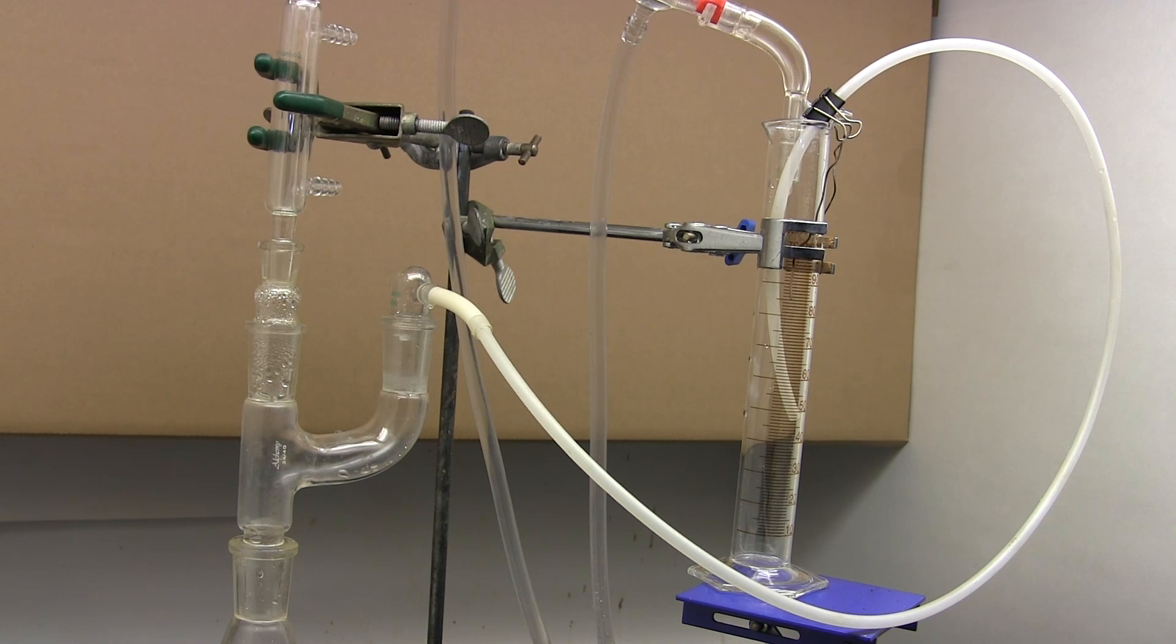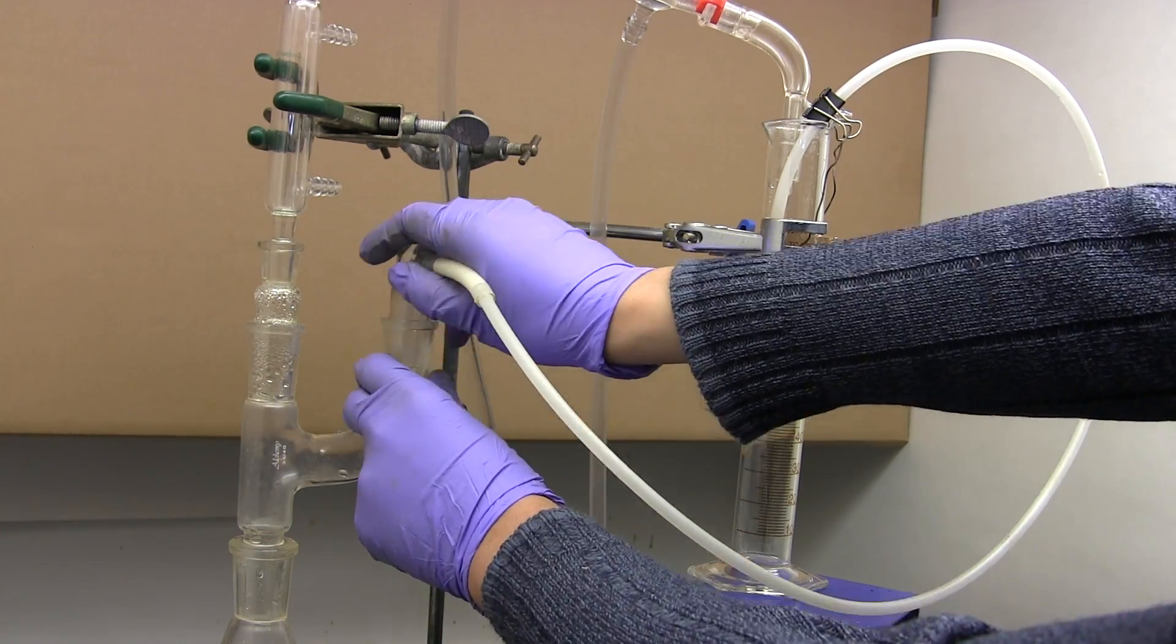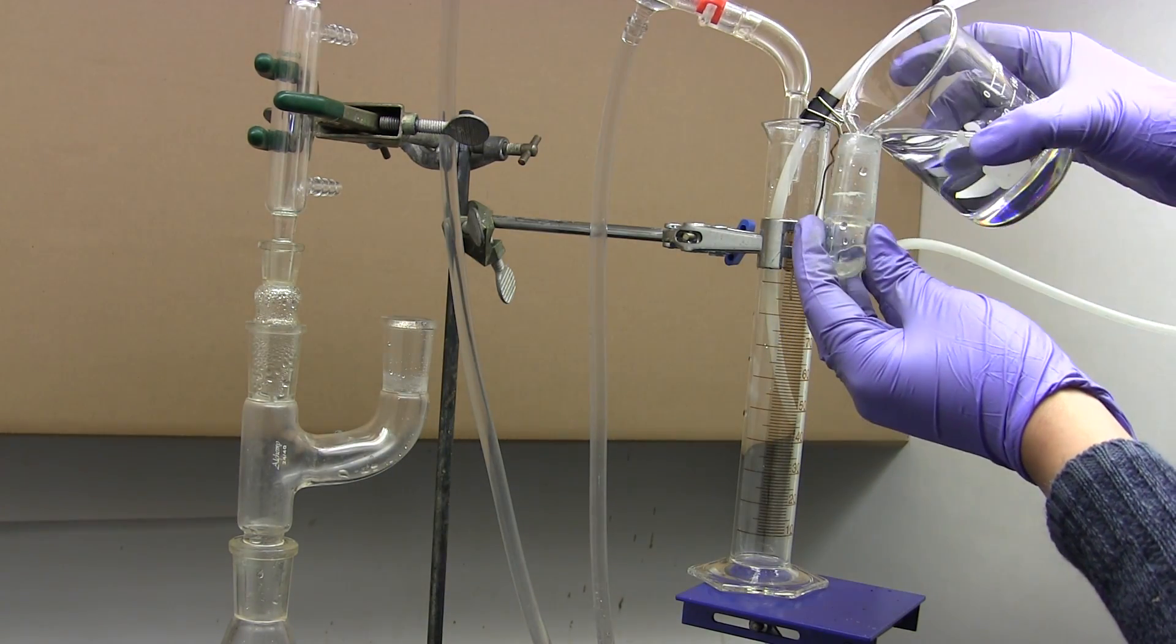Setting it up like this ensures the siphon will always work and withdraw fluid from the graduated cylinder, without over-emptying it and sucking in air that stops the siphon and causing it to overflow later. Now you need to pre-fill the tube in the graduated cylinder with the carrier fluid.